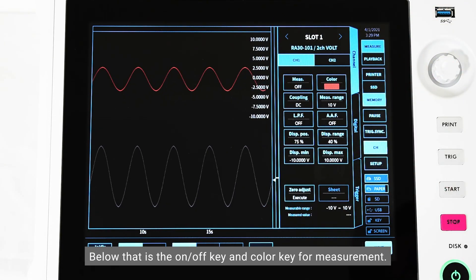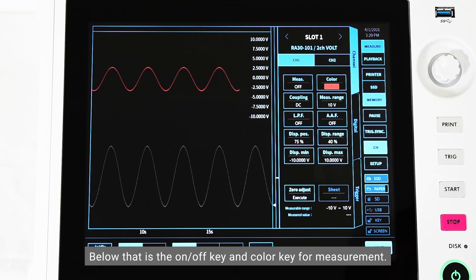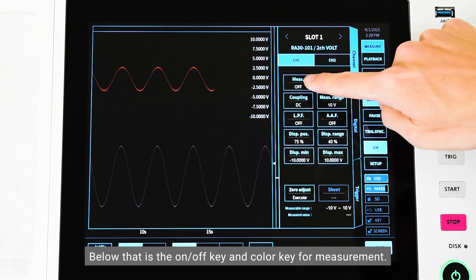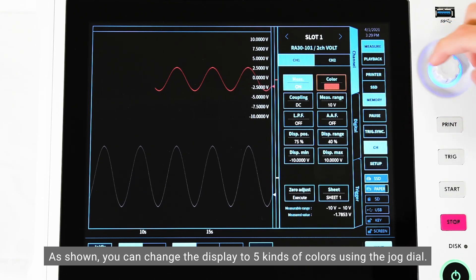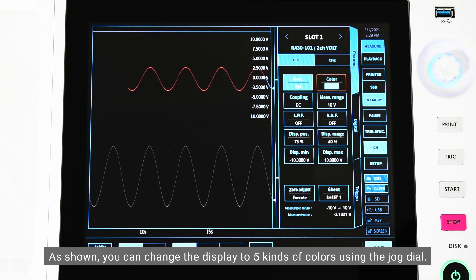Below that is the on/off key and color key for measurement. As shown, you can change the display to five kinds of colors using the jog dial.